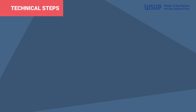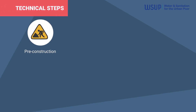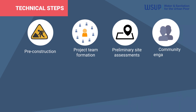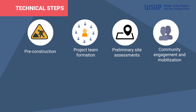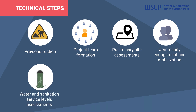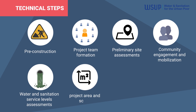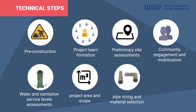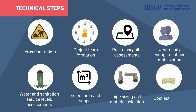The technical pre-construction steps include: project team formation, preliminary site assessments, community engagement and mobilization, water level and sanitation service level assessments, identification of the project area and scope, subdividing the area into blocks, checking pipe sizing and material selection, and cost estimation.